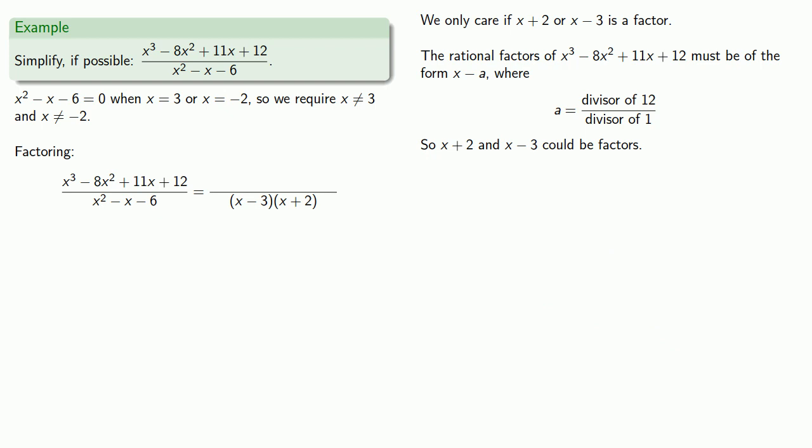We'll check x minus 3. So again, using synthetic division... Since our remainder is 0, we know that x minus 3 is a factor. And so x cubed minus 8x squared plus 11x plus 12 is x minus 3 times x squared minus 5x minus 4.